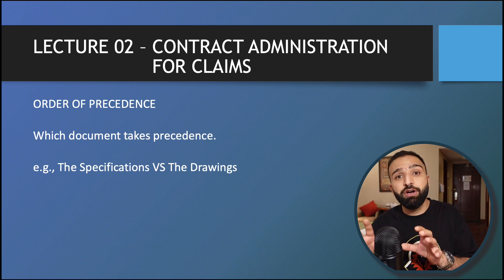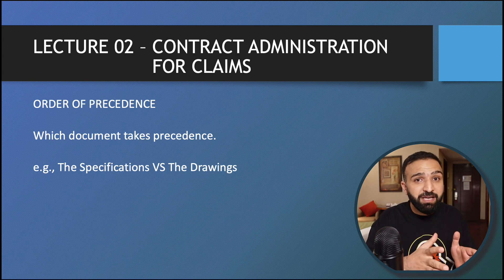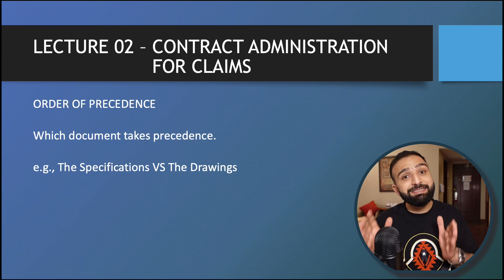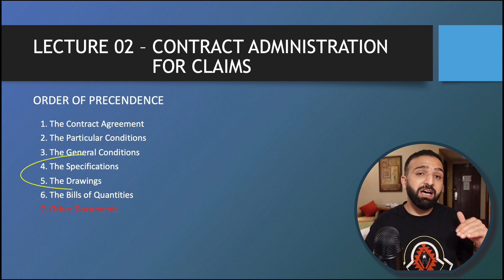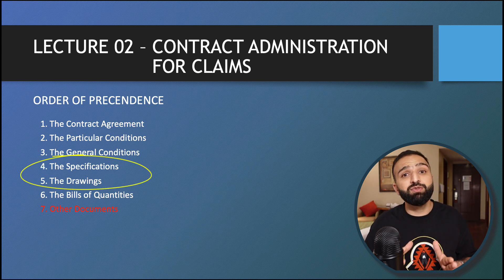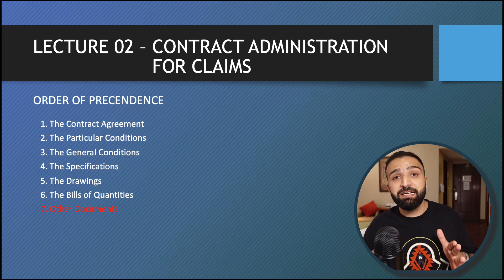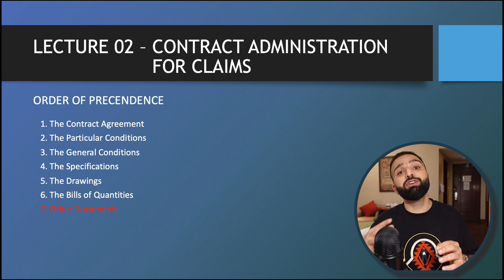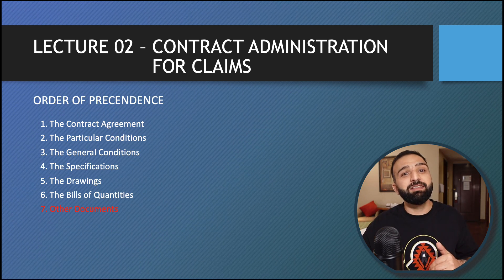The order of precedence is basically a list that defines which document takes priority over what. For example, during execution you find there is a conflict between the specifications and the drawings — which document should take precedence? As you can see on the screen, the specs are listed above the drawings, so the specifications would take precedence. This is the order listed as per the FIDIC books; your contract could be slightly different. If there is no order of precedence in the contract, you should try and make sure it is implemented, because it resolves a lot of unnecessary conflicts.